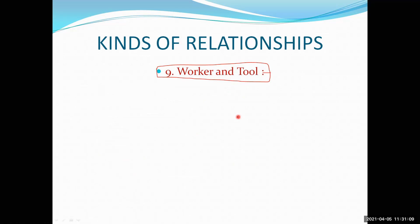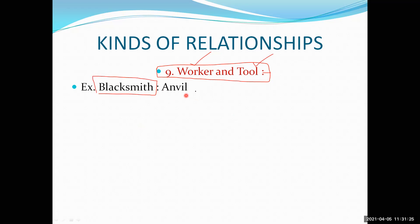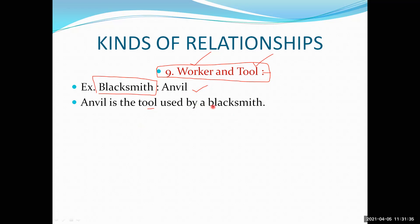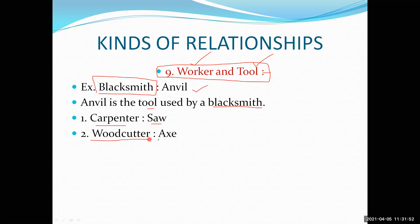Now we have a different relationship — worker and his tool. Blacksmith is a worker who makes tools from iron, and he uses an anvil. Next is carpenter — carpenter uses a saw to make furniture. Then woodcutter — if a woodcutter wants to cut trees, he uses an axe. So axe is the tool used by a woodcutter.